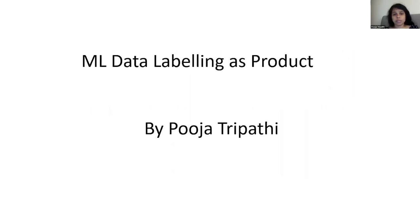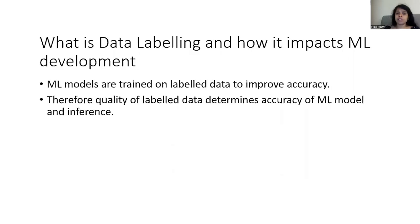Before we jump into what ML data labelling as a product means, I would first like to discuss the impact of ML data labelling for ML development. Data labelling means that a human is looking at some data which will be fed to a model to train it. The more accurately the human annotates that data, the better the model accuracy. Therefore, the quality of labelled data is one of the prime factors determining the quality of your ML model, making it imperative to improve data labelling quality to improve model accuracy.